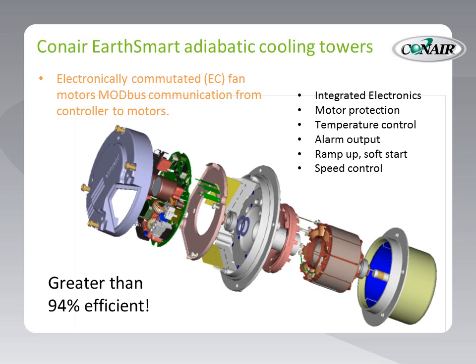Electrically commutated EC fan motors provide variable frequency type efficiency with even more control in an integrated package. Modbus communication from the unit controller to each motor in the system ensures precise control and performance. Soft start and ice breaker modes protect fan blade integrity and provide long life. In the unlikely event of a failure, the entire assembly is replaced as a unit — no gear pullers, fan balancing, or belt tensioning is ever required.